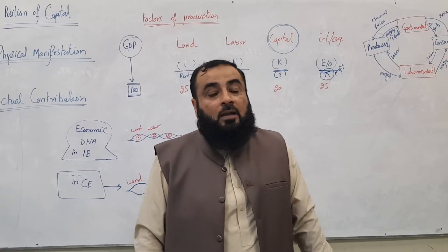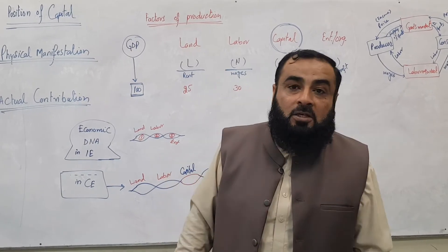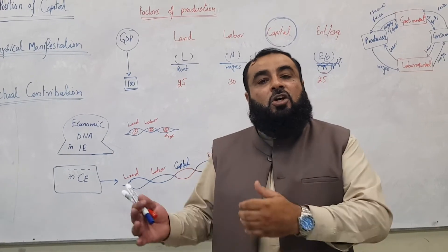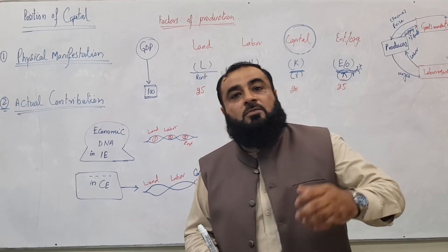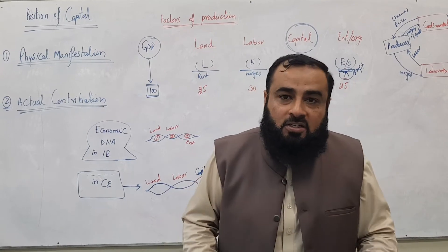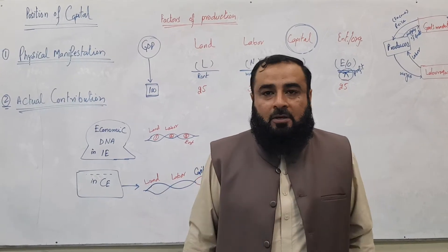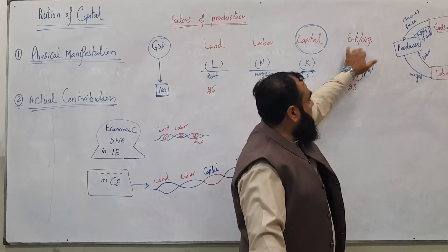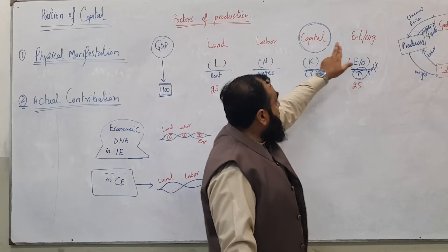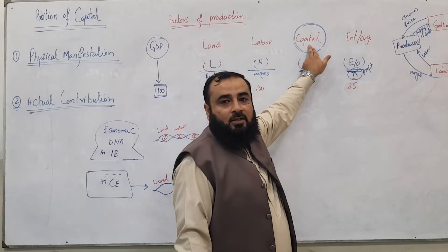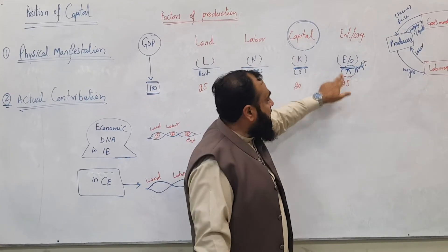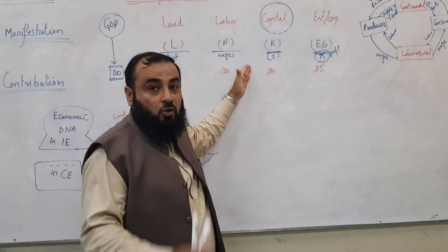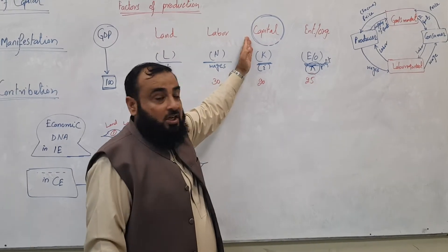The entrepreneur says: I am the owner of the business, I have invested my capital. Using the Islamic principle of Al-Khiraaj Bin Daman — if you want to make profit, you must be at risk of loss. I am bearing the risk of loss, I have invested my capital. We respond: where is your capital? He points to it and says this is my capital, so give me a reward. We say that capital is a separate factor of production in your economic paradigm — it is a separate entity.